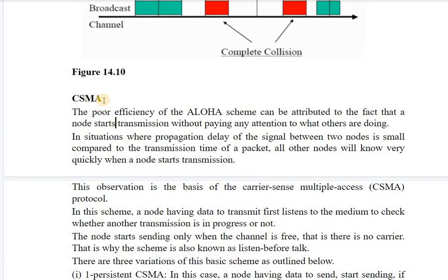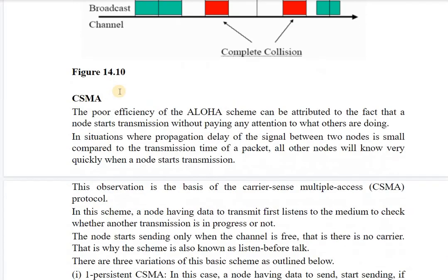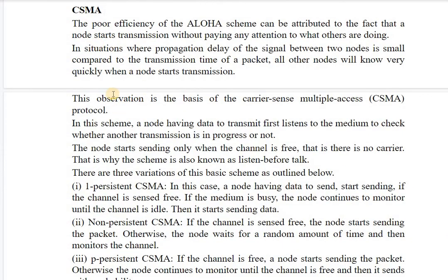The second technique is CSMA — Carrier Sense Multiple Access. In Aloha, channels were not able to detect whether another channel was sending data and sent whenever they had data, without sensing the channel. CSMA introduces carrier sensing, so due to Aloha's lack of carrier sensing it encountered poor efficiency. In CSMA, the node having data to transmit first listens to the medium to check whether another transmission is in progress. The node starts sending only when the channel is free — that is why this scheme is also called listen before talk.